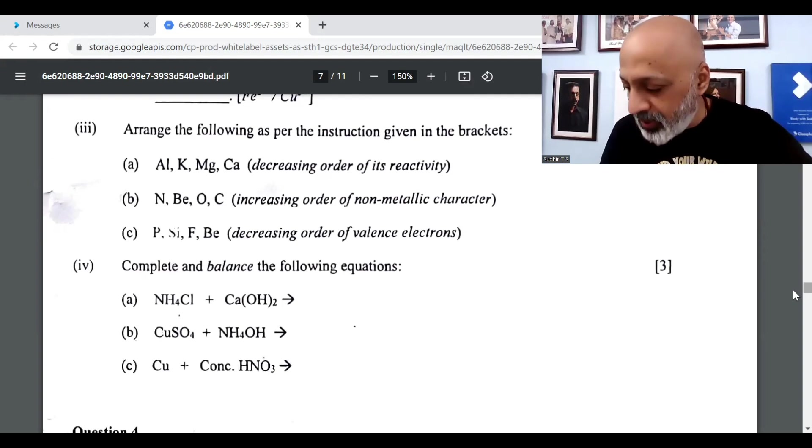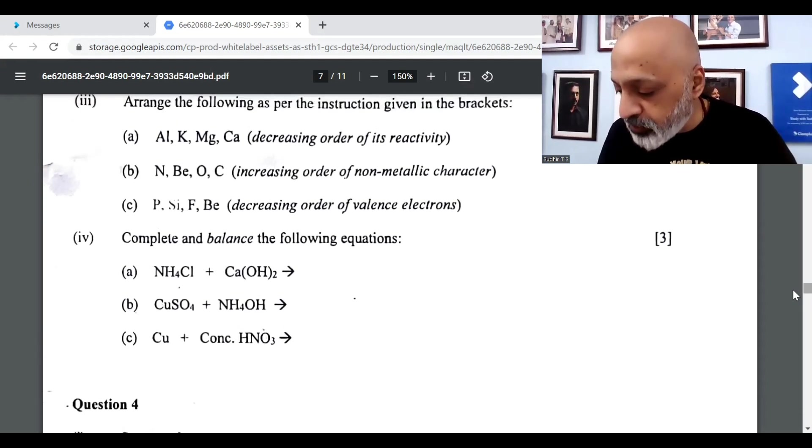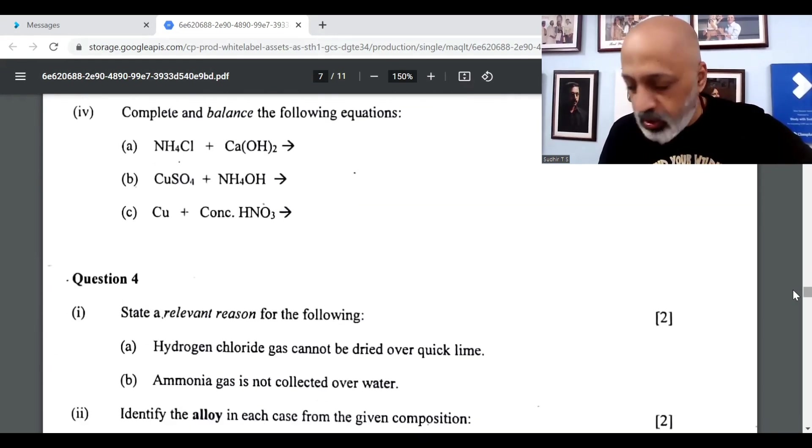The 4th one is the balancing part which you would have done. I'll just read out the first one too. NH4Cl plus Ca(OH)2 reacts to CaCl2 plus 2NH3 plus 2H2O.